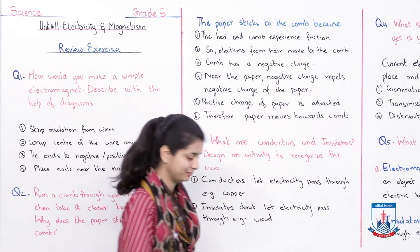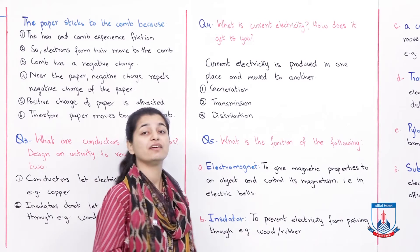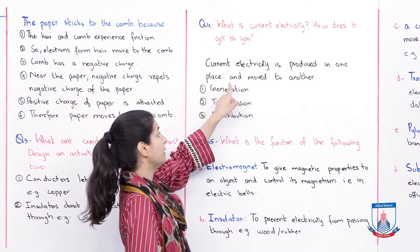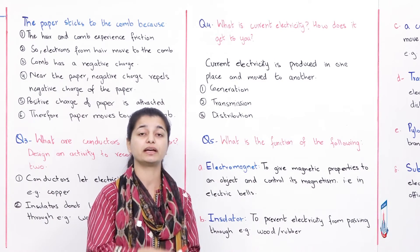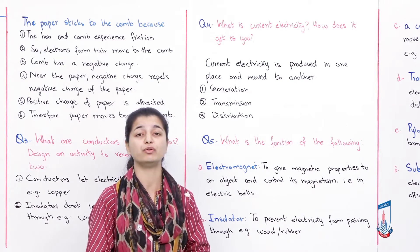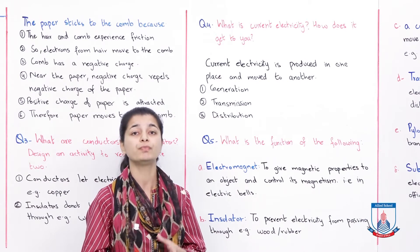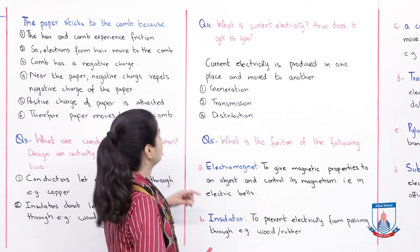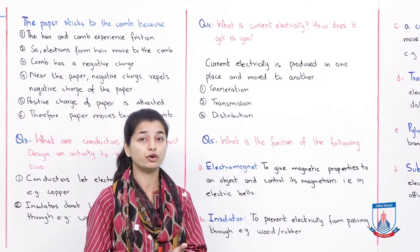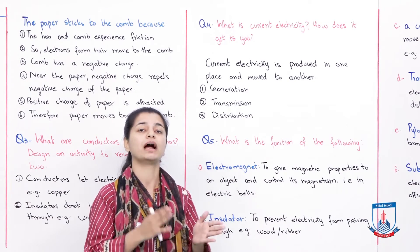Question number 4: What is current electricity? How does it get to you? In a very recent lecture we discussed exactly this topic. Current electricity is produced in one place and moved to another. The three stages are well described. The first stage is generation — electricity is created in a power plant. It can be made from non-renewable or renewable resources. Then it goes to a transformer, where its power is increased so it can travel large distances.